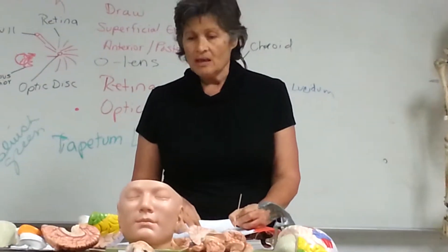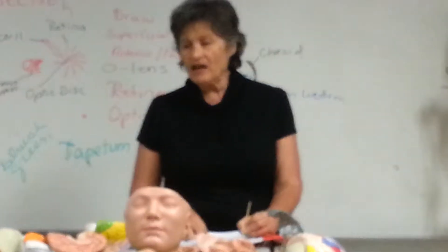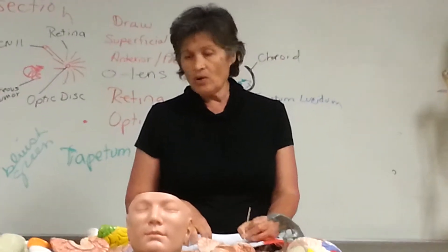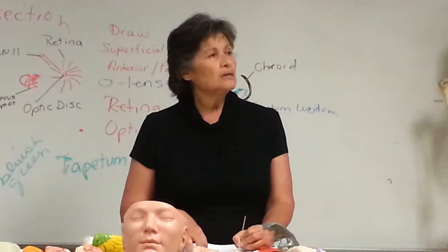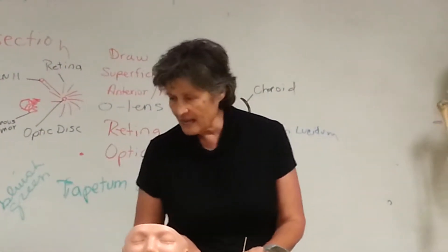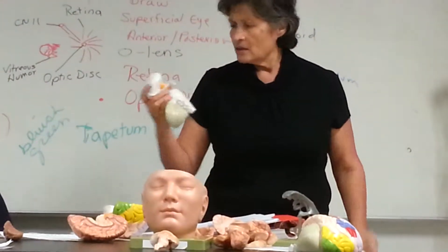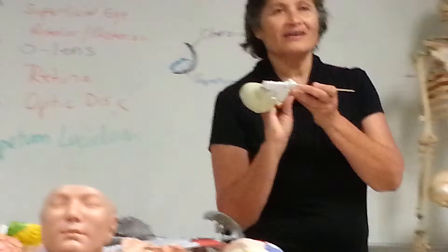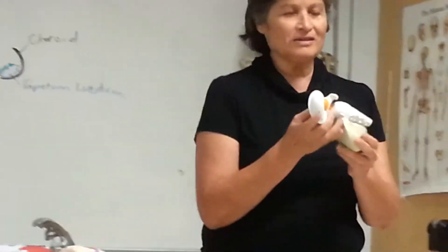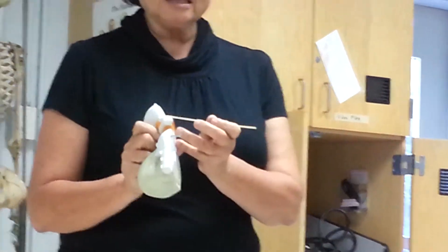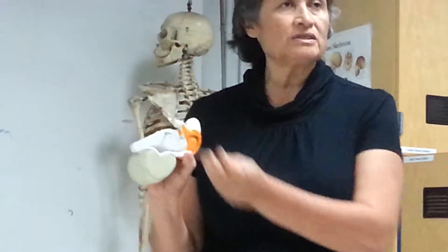Pituitary gland — has anyone found the pituitary gland in any of the models? It's hanging off of it. Number 115 — that's not very well depicted, but that's the pituitary gland. That's the optic nerve. That's the optic chiasma. Optic chiasma, pituitary gland.